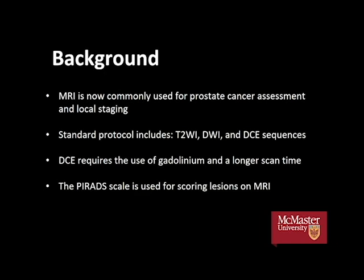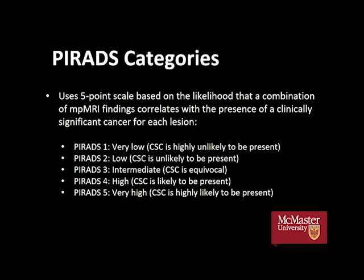For assessing lesions on MRI, the PI-RADS scale is used. This is a five-point scale that correlates to the likelihood that there is clinically significant prostate cancer for each lesion. PI-RADS 1 and 2 generally suggest benign lesions. PI-RADS 3 suggests an intermediate risk — equivocal for clinically significant cancer — whereas PI-RADS 4 and 5 are more highly suspicious for clinically significant prostate cancer.